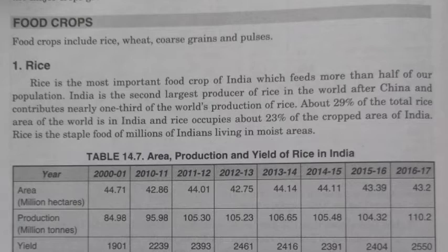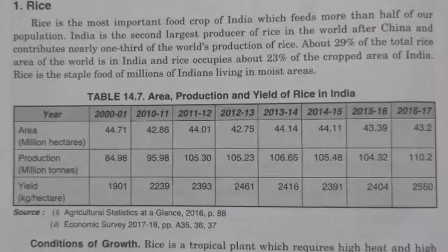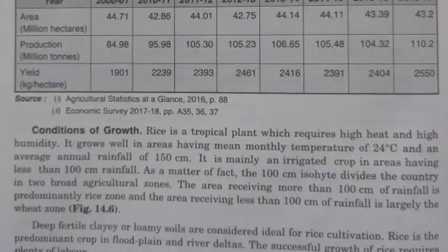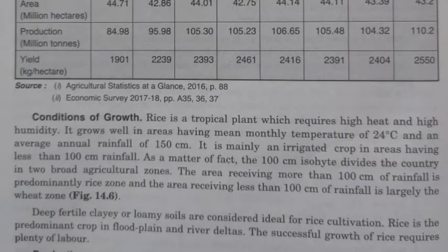In this table, data is provided according to the area, production, and yield of rice in India over the years. Please pause the video and go through the table. Now let us discuss the geographical conditions of rice. Rice is a tropical plant which requires very high temperature and high humidity.